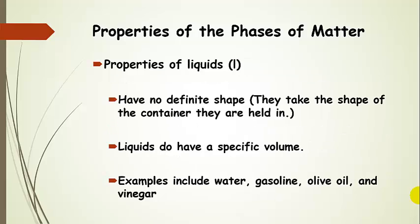Liquids don't have a definite shape — when you pour a liquid into a container, it's going to take the shape of the container. But they do have a specific volume. So if you put one cup of water into a four-quart container, it's not going to fill up the whole four quarts; it's only going to fill up the one cup of water that you put in there. Some examples of liquids are water, gasoline, olive oil, and vinegar. We're going to learn more about liquids and gases later on in the course.